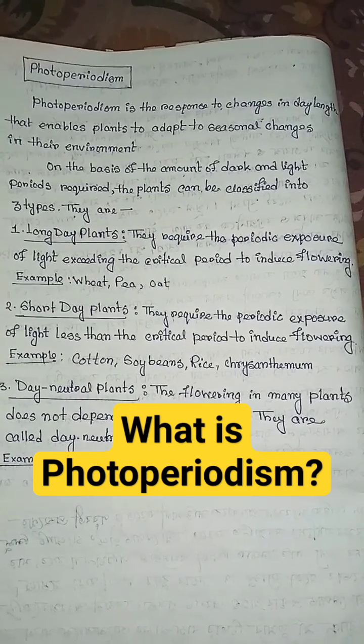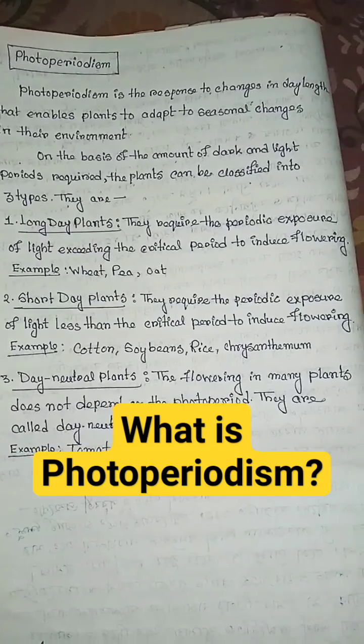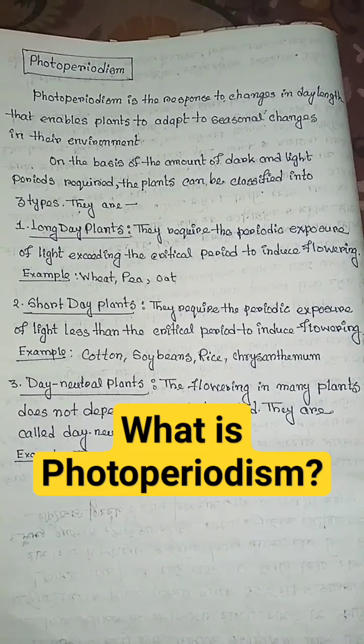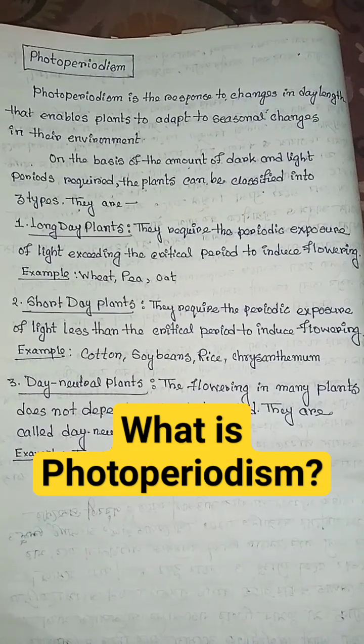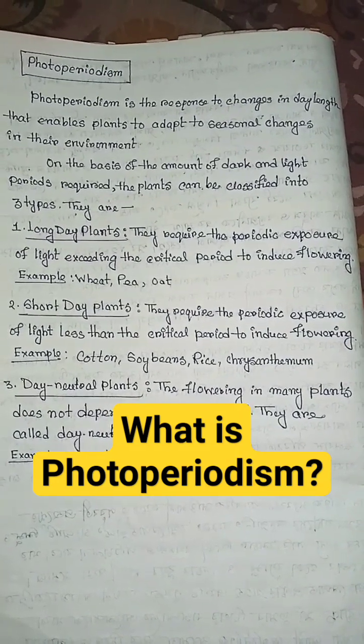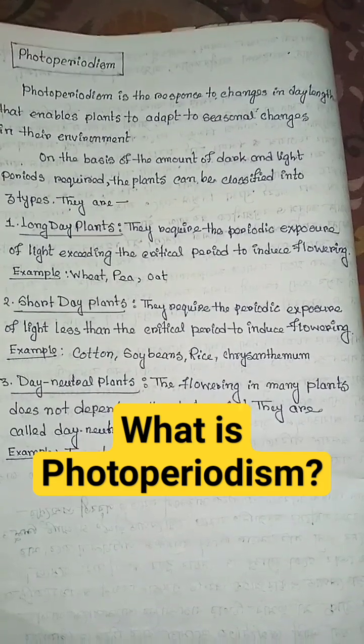Short day plants: they require the periodic exposure of light less than the critical period to induce flowering. Examples include cotton, soybeans, rice, etc.